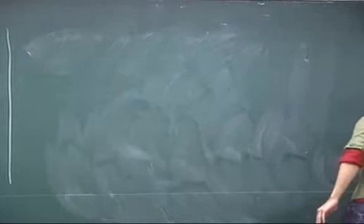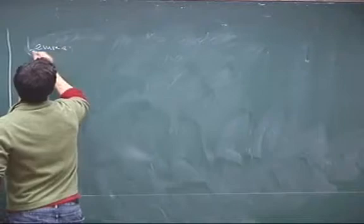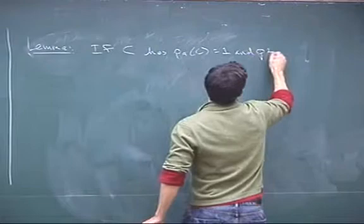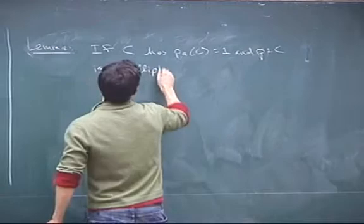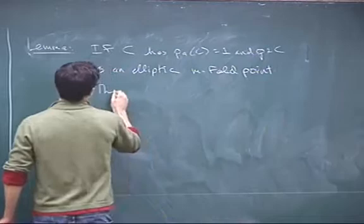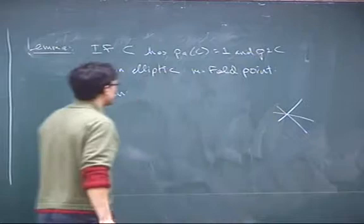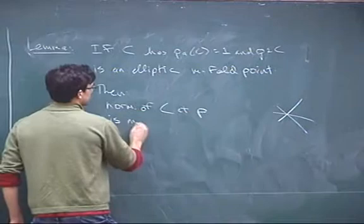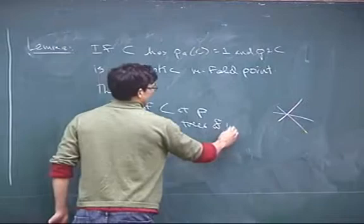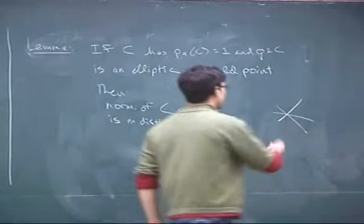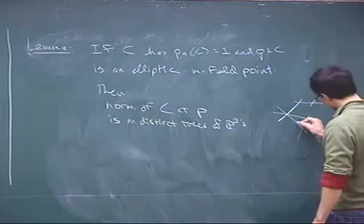Lemma: if C is a curve of arithmetic genus 1 and P in C is an elliptic M-fold point, let me spell out what it means to be M-stable. The normalization of C at P is M distinct trees of P¹s. The only way to get an arithmetic genus 1 curve with one of these elliptic M-fold points is that each of the branches has to be a distinct tree of P¹s — it could be a tree, not necessarily irreducible.